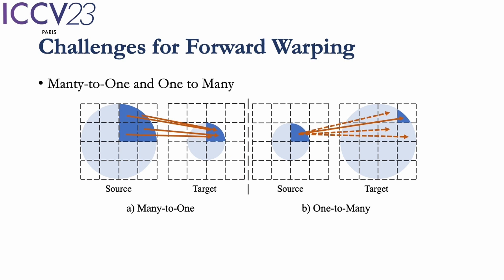However, there are two challenges for forward warping. The first one is the many-to-one issue. There is an example in 2D version in the left figure. If the object shrinks, there could be multiple pixels in the source image corresponding to the same pixel in the target image.